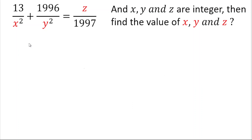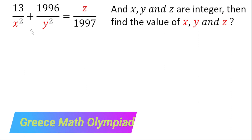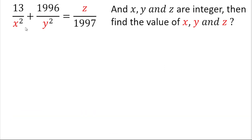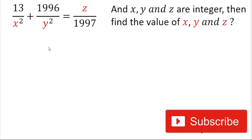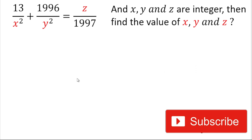Hello fans, welcome back again. Today in this video we are going to solve this interesting algebraic problem. This question has been asked in KRIS Math Olympiad. Please do subscribe the channel and do not forget to give thumbs up to the video. The problem here is the given expression, and they have mentioned that x, y, and z are integer numbers, then we'll have to find the value of x, y, and z.